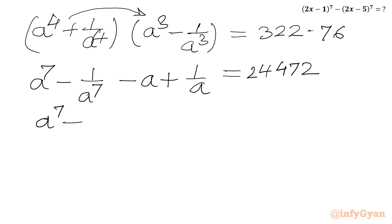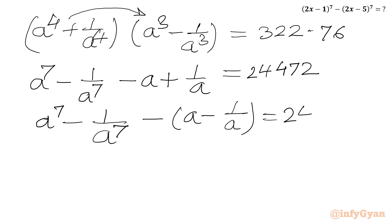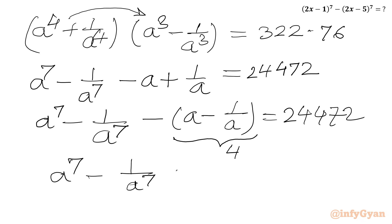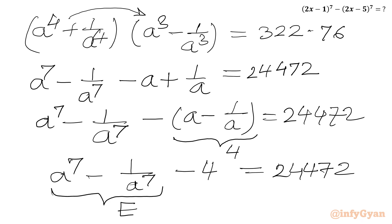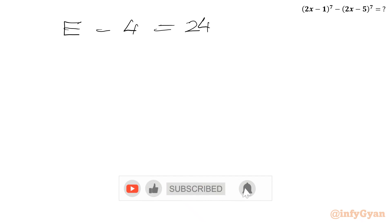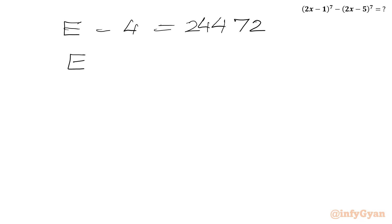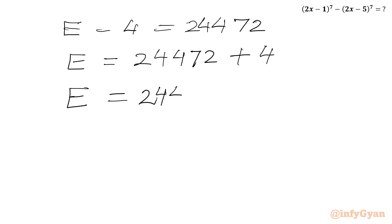Since a − 1/a = 4, we write a⁷ − 1/a⁷ − 4 = 24,472. Adding 4 to both sides, and noting that a⁷ − 1/a⁷ is our required expression e, we get e = 24,472 + 4 = 24,476. So this is our final answer.